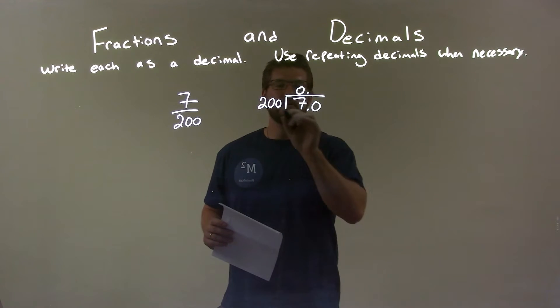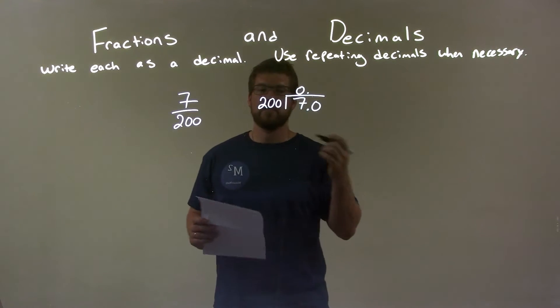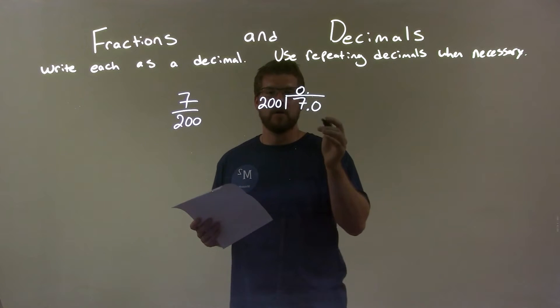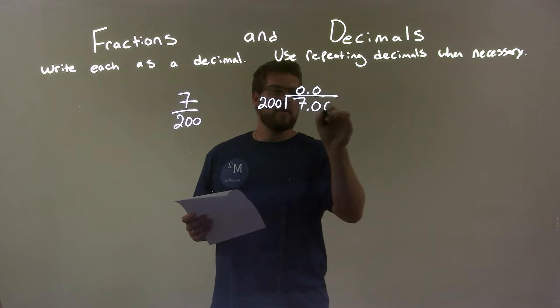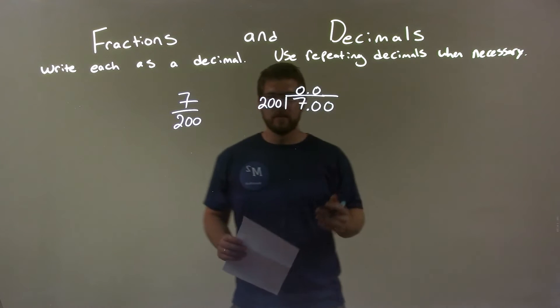Does 200 go into 70? Well, no. 70 is smaller than 200. So we add another zero. Does 200 go into 700?